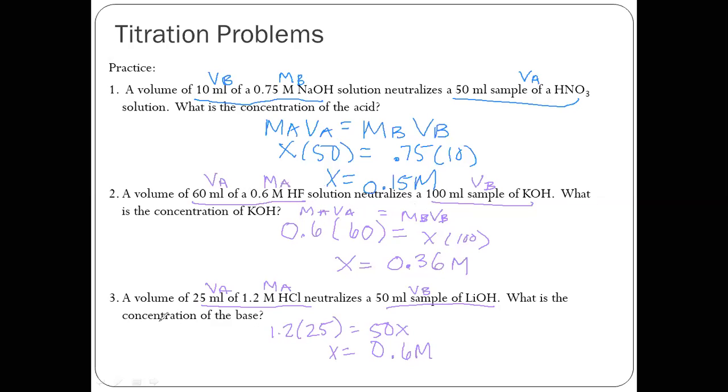And then the last one, 25 mils of 1.2 molar HCl is the acid. So 1.2 times 25 equals 50 times X. And then divide both sides by 15, you get X equals 0.6 molar.